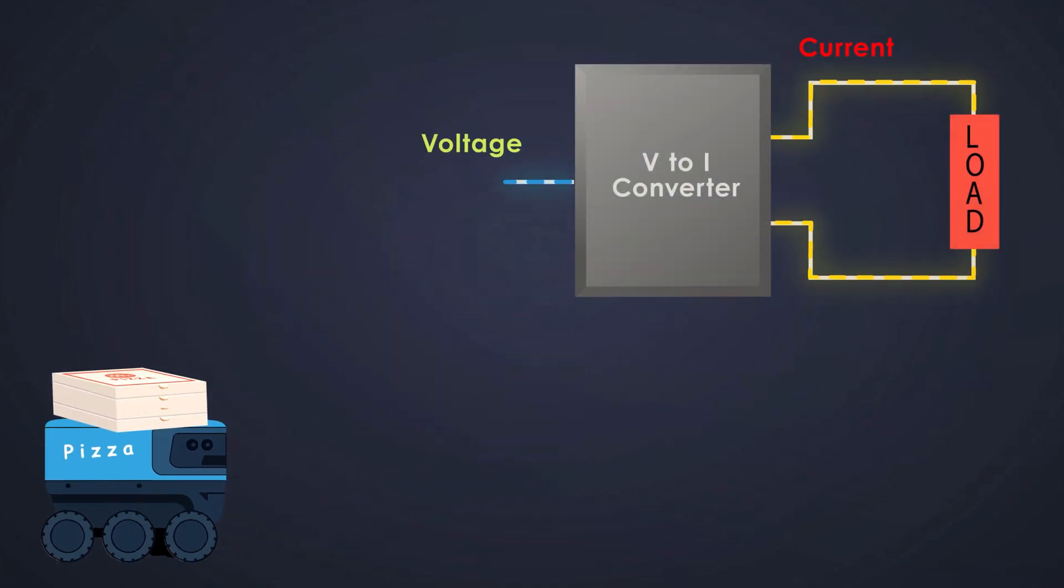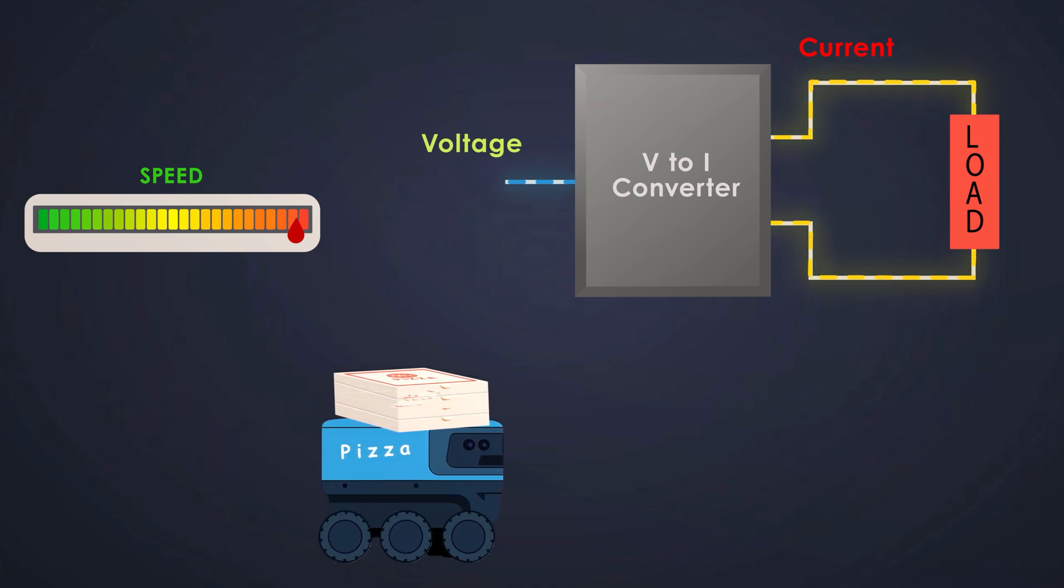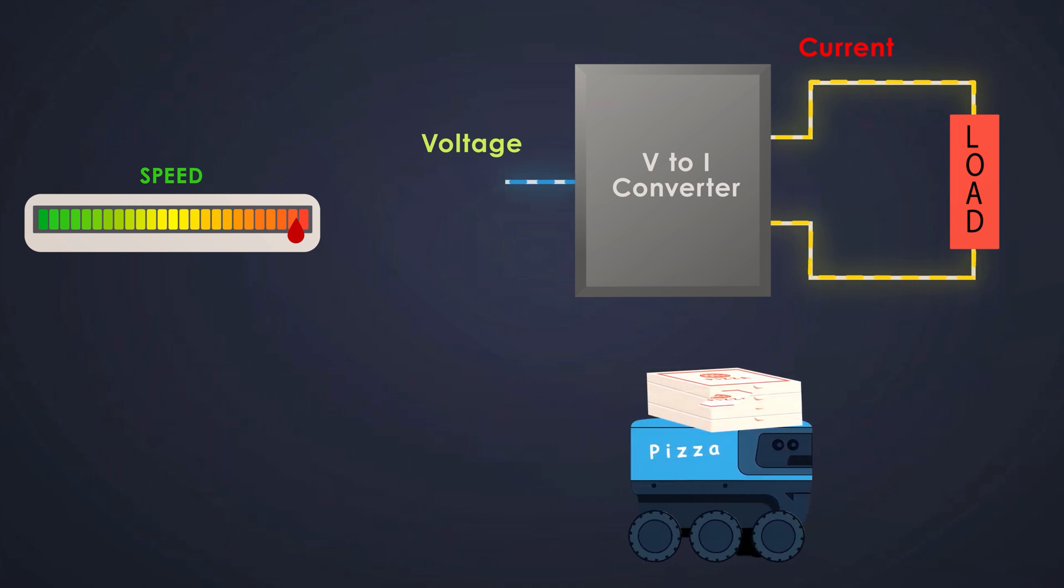And the robot figures out in real time exactly how much push it needs to keep the deliveries on time, whether it's carrying one slice or a whole party box. And that's what our V2I converter does. We set a voltage input like giving a speed command, and the circuit, just like the robot, calculates and delivers the perfect amount of current to the load. As the robot adapts its effort based on weight, this circuit uses feedback to keep the current steady no matter what load we throw at it.